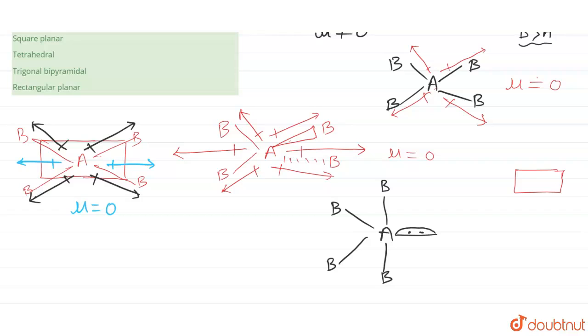The two axial A-B dipoles are in opposite directions — one pointing upward and one pointing downward — so they are equal in magnitude and opposite in direction. They cancel each other out.